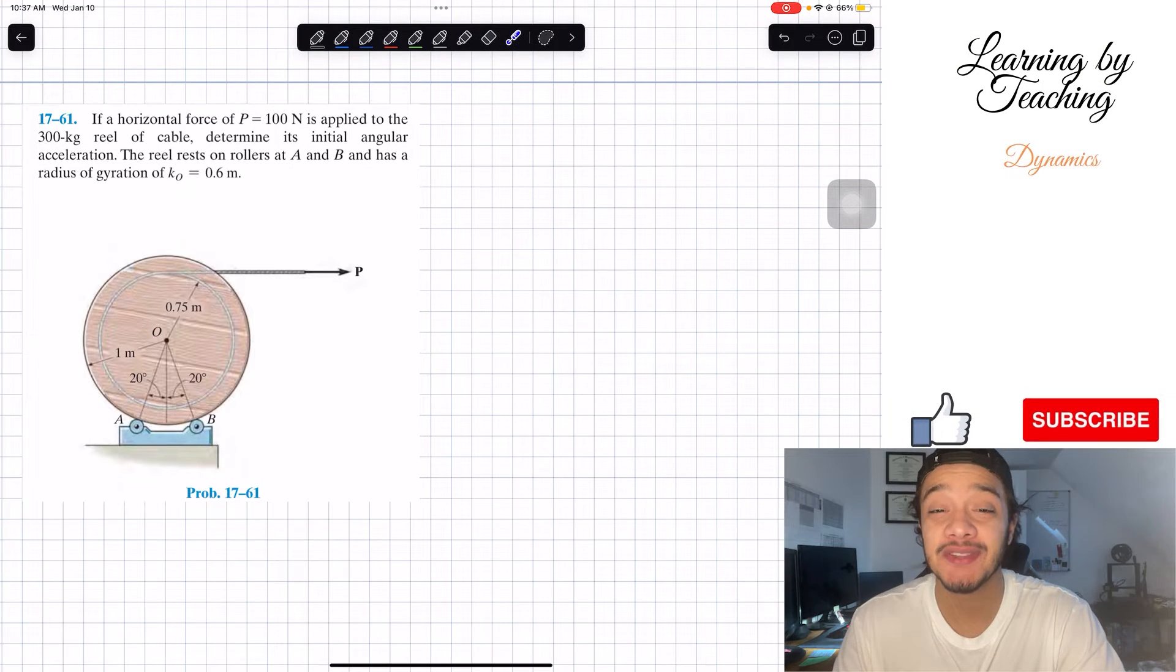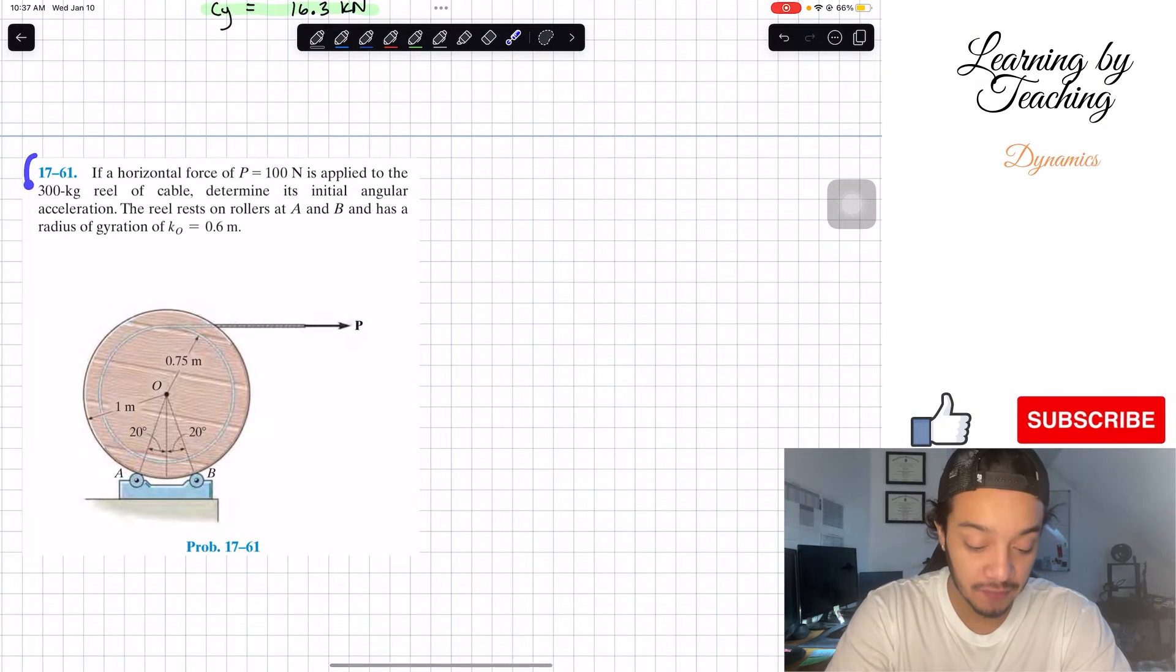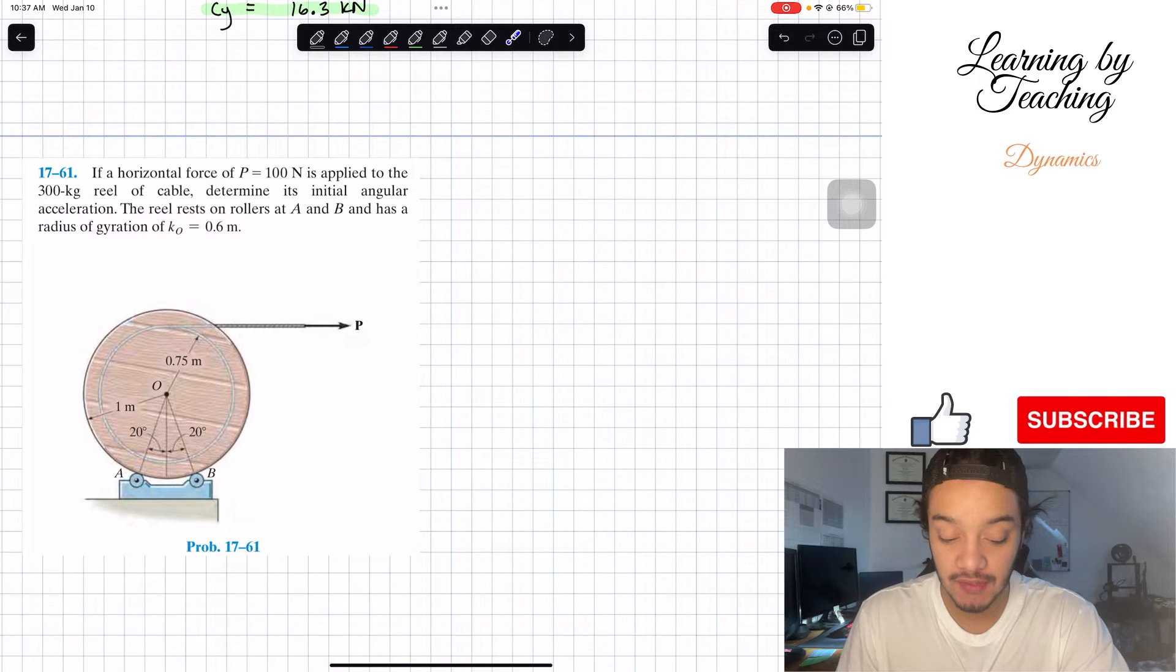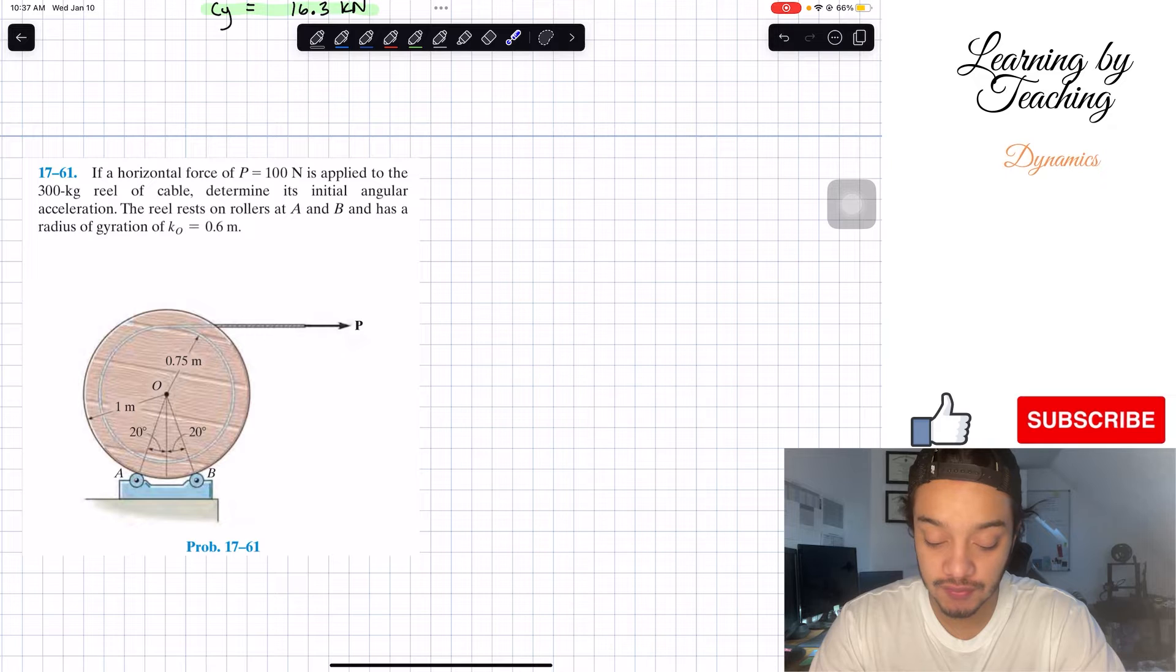Welcome back everyone to learning by teaching, today we're in dynamics and we're going to be solving problem 17-61. If a horizontal force of P equals 100 N is applied to the 300 kg rail of cable, determine its initial angular acceleration. The rail rests on rollers at A and B and has a radius of gyration of K_O equal to 0.6 m.